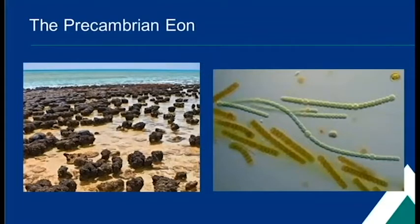In the Archean, continents and oceans had formed and Earth had an atmosphere, but it didn't have oxygen just yet. Single-celled bacteria and algae appeared during this time. Finally, during the Proterozoic, photosynthesis began with cyanobacteria, which are pictured on the right of this slide. This created more oxygen so that complex life would be able to live on Earth later on. The cyanobacteria were also able to create sedimentary formations called stromatolites, which are pictured on the left.